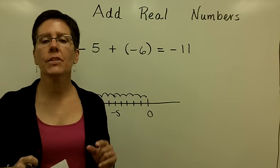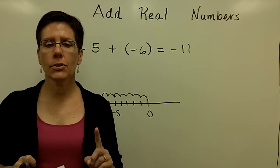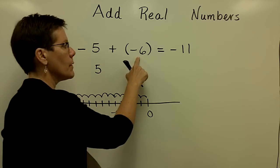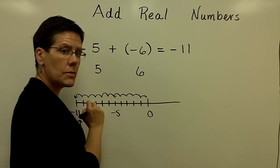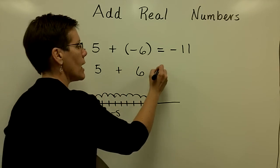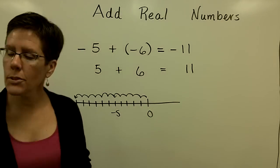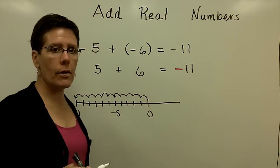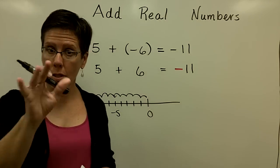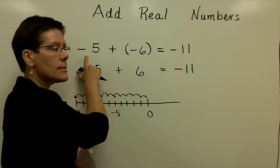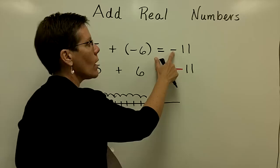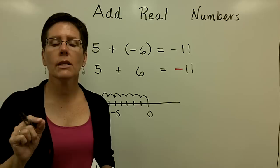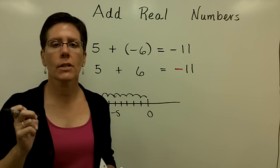When you have two numbers that have like signs, you need to add their absolute values. The absolute value of negative 5 is positive 5. The absolute value of negative 6 is positive 6. Add their absolute values, and then apply the common sign that both numbers share. You can also think of it as having $5 of debt, adding $6 of debt, and being further in debt at negative $11. So if the signs are alike, add their absolute values and give your answer the common sign.